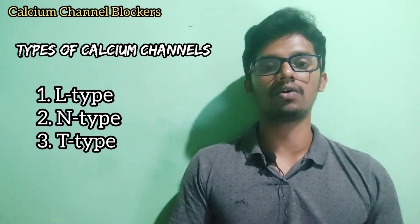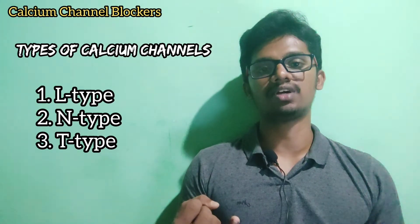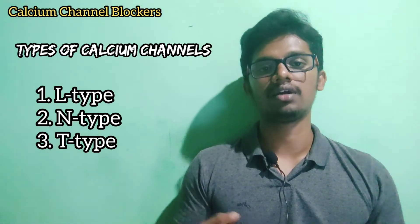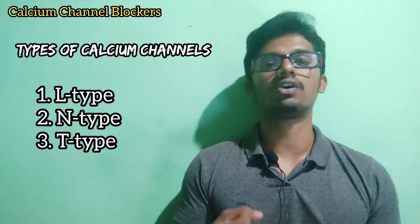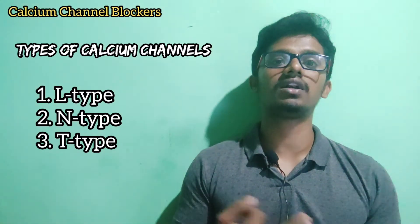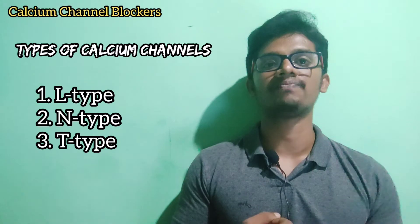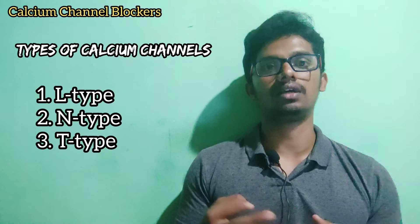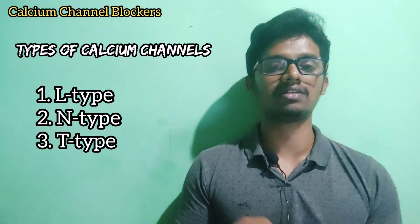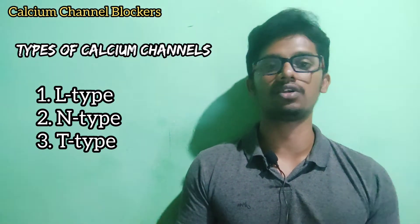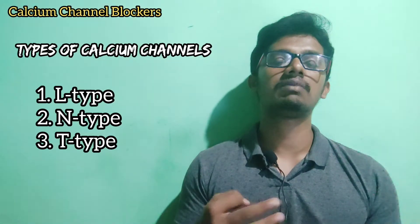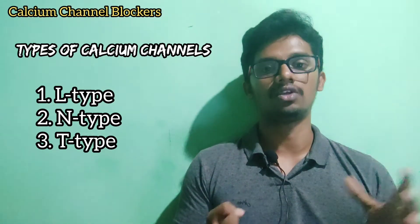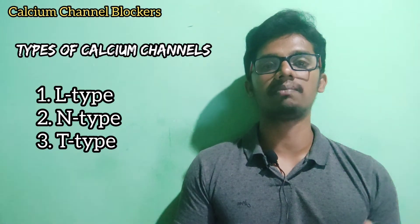There are three types of calcium channels. One is the L-type calcium channel, one is the N-type calcium channel, and one is the T-type calcium channel. Depending on the area where they are situated, they are divided into these three types. The mechanism is the same for all — calcium entry and exit — and calcium entry is the main function driving muscle contraction.